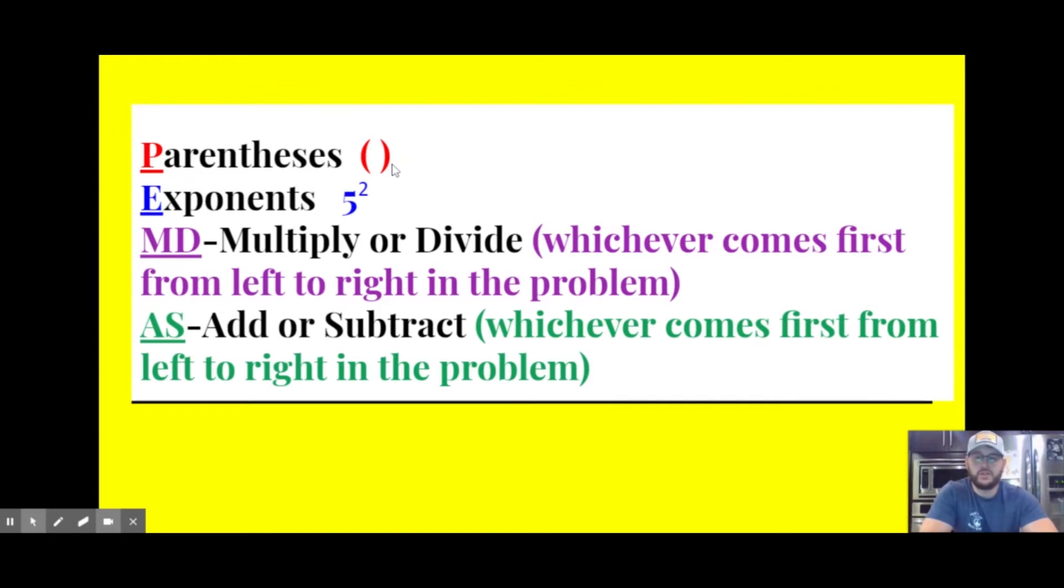Once we've addressed the parentheses, we move to exponents. If you see exponents in the expression, you must solve them next. Once you've addressed your parentheses and your exponents, you look for multiplication and division. If multiplication is the only one of the two that you see, you go ahead and multiply. If you see division and only division, we go ahead and divide. But if you see multiplication and division, we do whichever comes first in the expression from left to right.